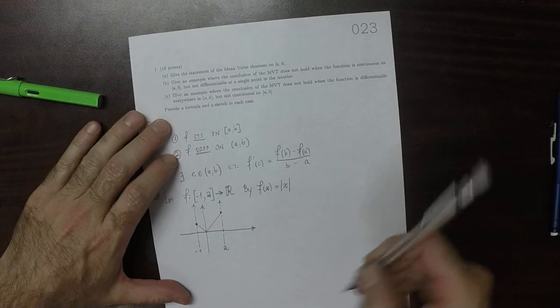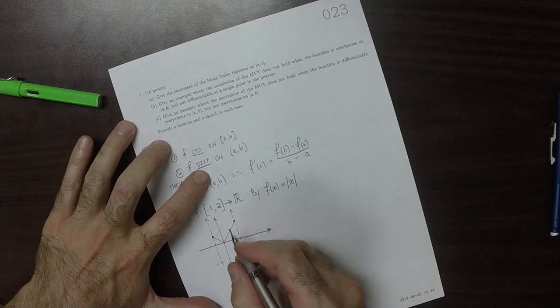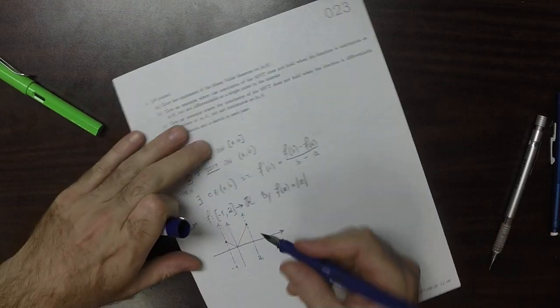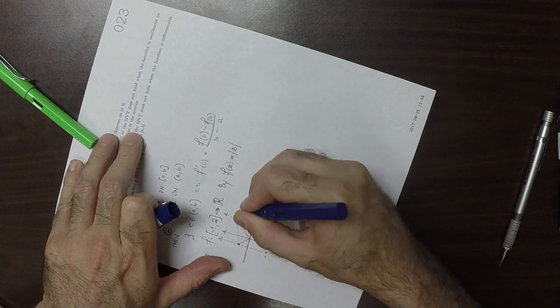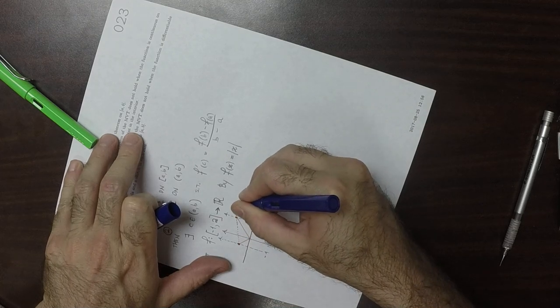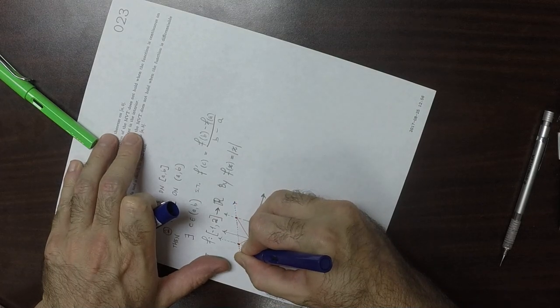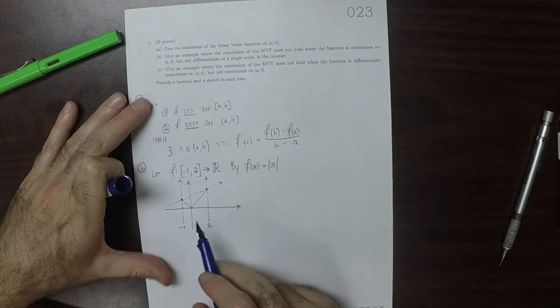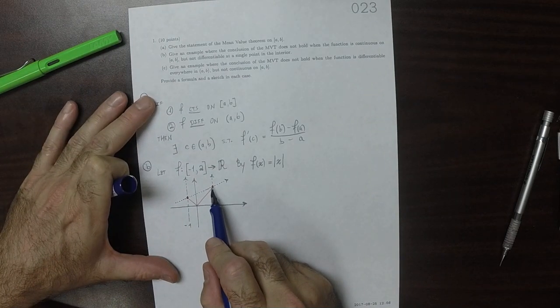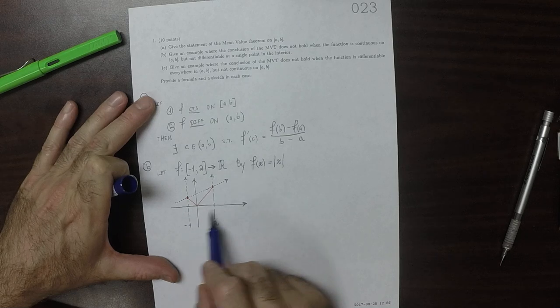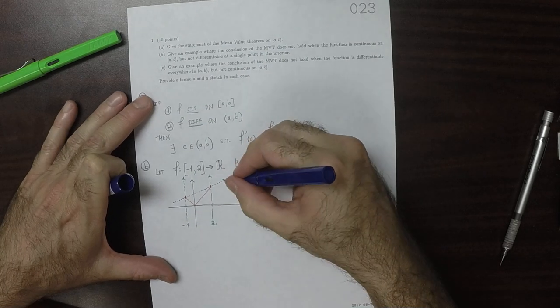This function looks like this. So the slope of the secant line, well, it goes up 1, and then it does that over the course of 3. So this has slope 1/3.